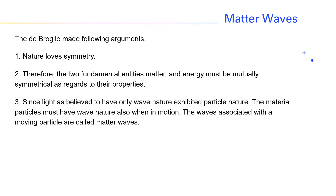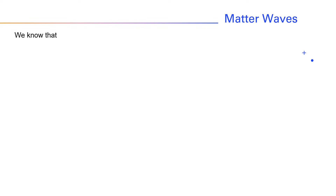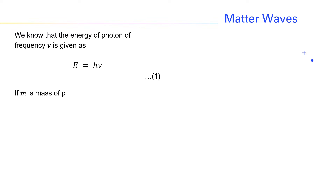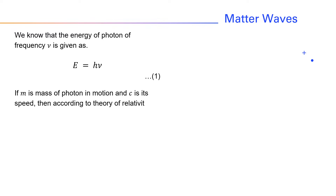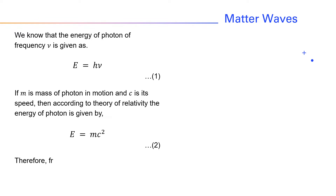He suggested that certain basic physical concepts should apply to both the fundamental entities, namely waves and particles. We know that the energy of a photon of frequency nu is given as E = hν (equation 1). The rest mass of photons is 0. If m is the mass of a photon in motion and c is its speed, then according to the theory of relativity, the energy of a photon is given by E = mc² (equation 2). Therefore, from equations 1 and 2, we get hν = mc² (equation 3).